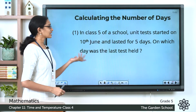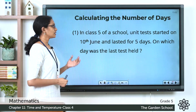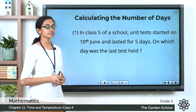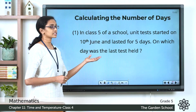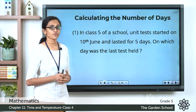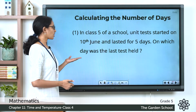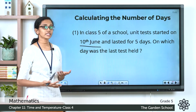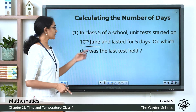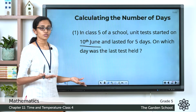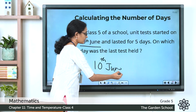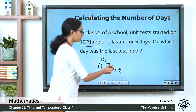The first question: in class 5 of a school, a unit test started on 10th June and lasted for 5 days. On which day was the last test held? So the unit test started on the 10th of June. The test lasted for 5 days including the 10th of June. So the test started on 10th June — this was day 1 — and it lasted for how many more days?